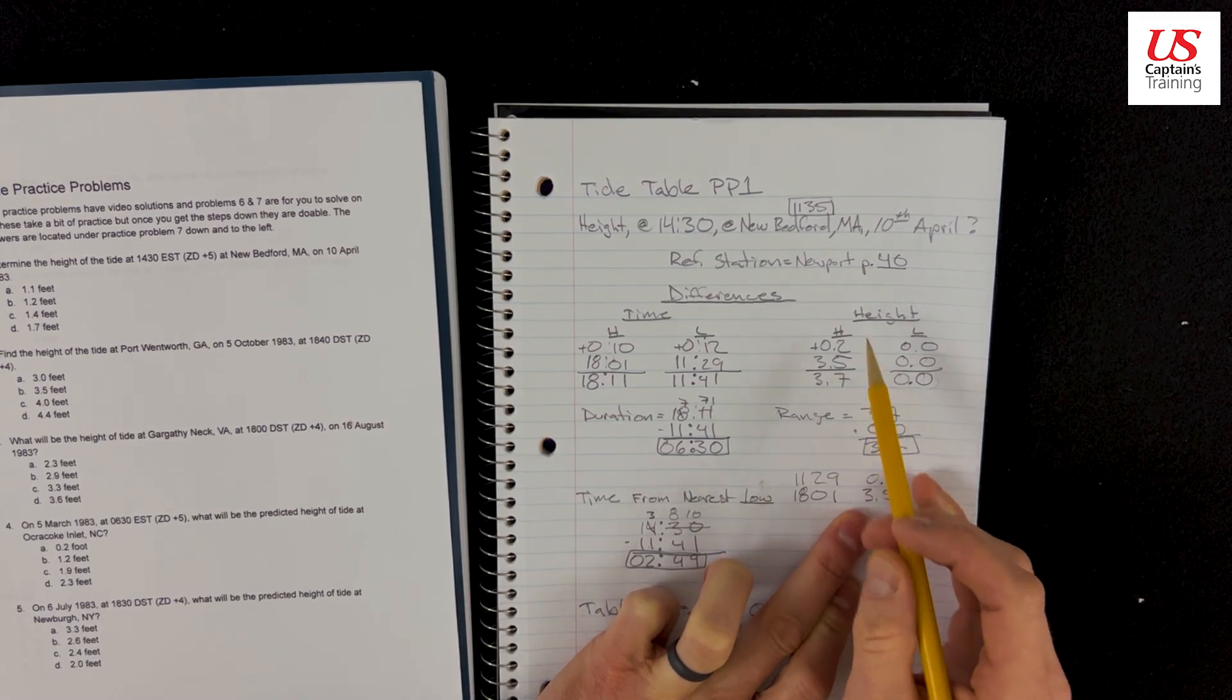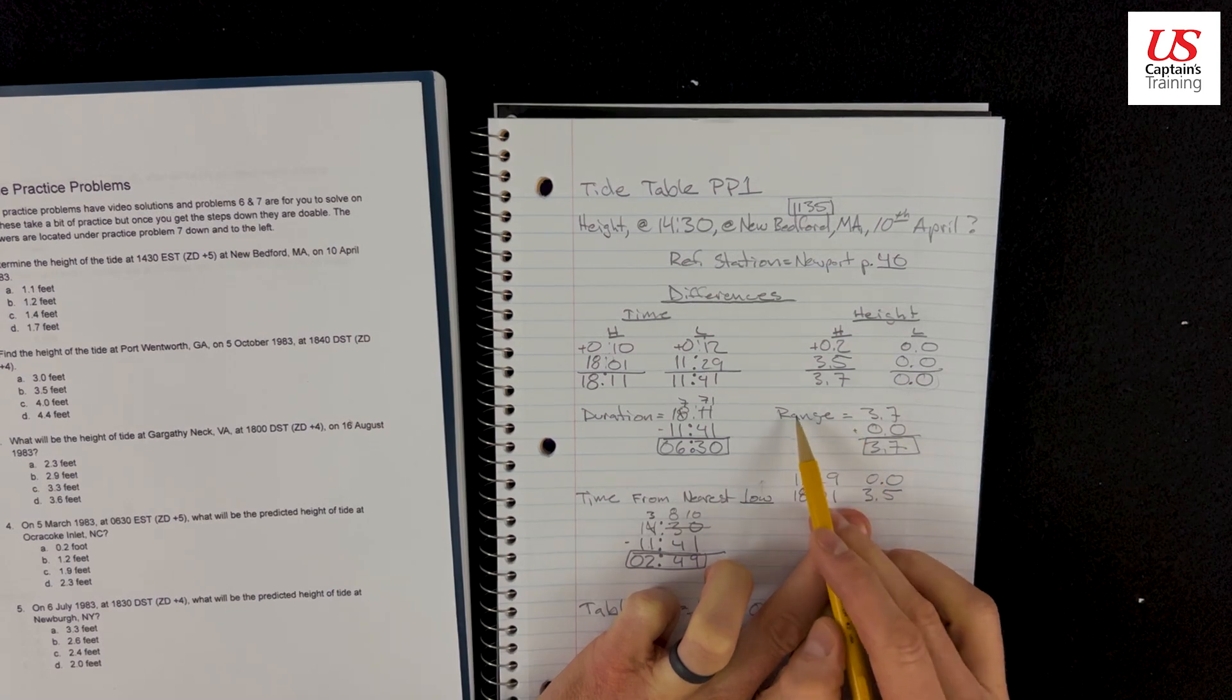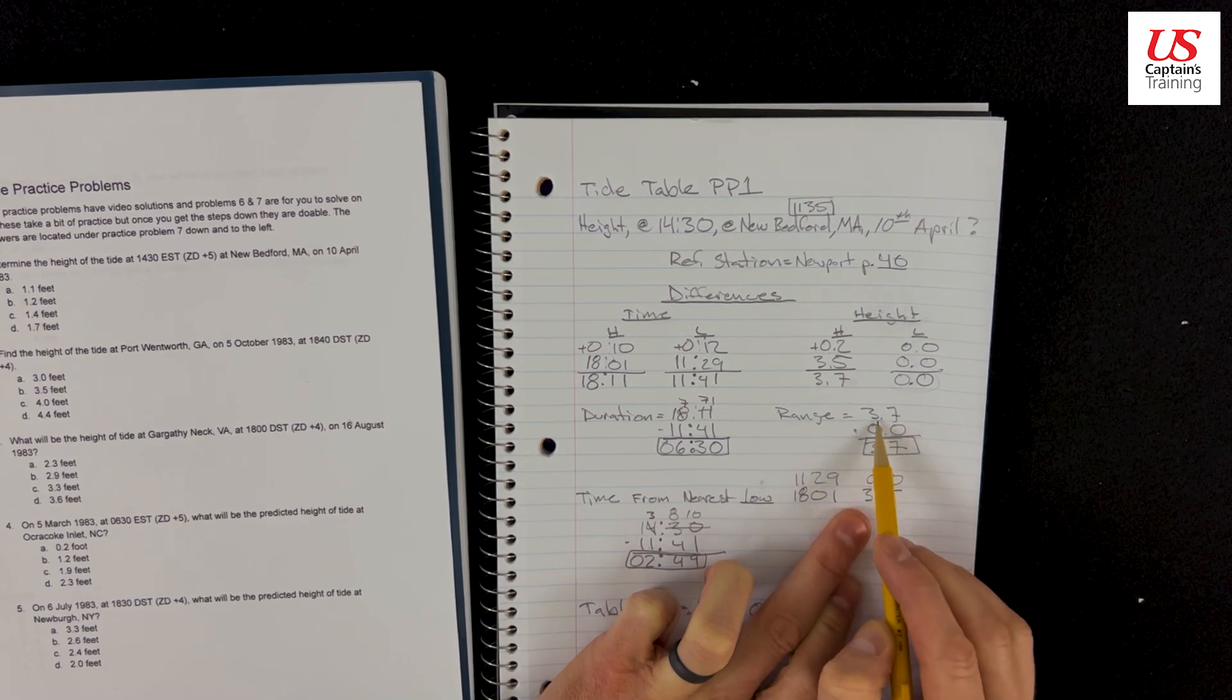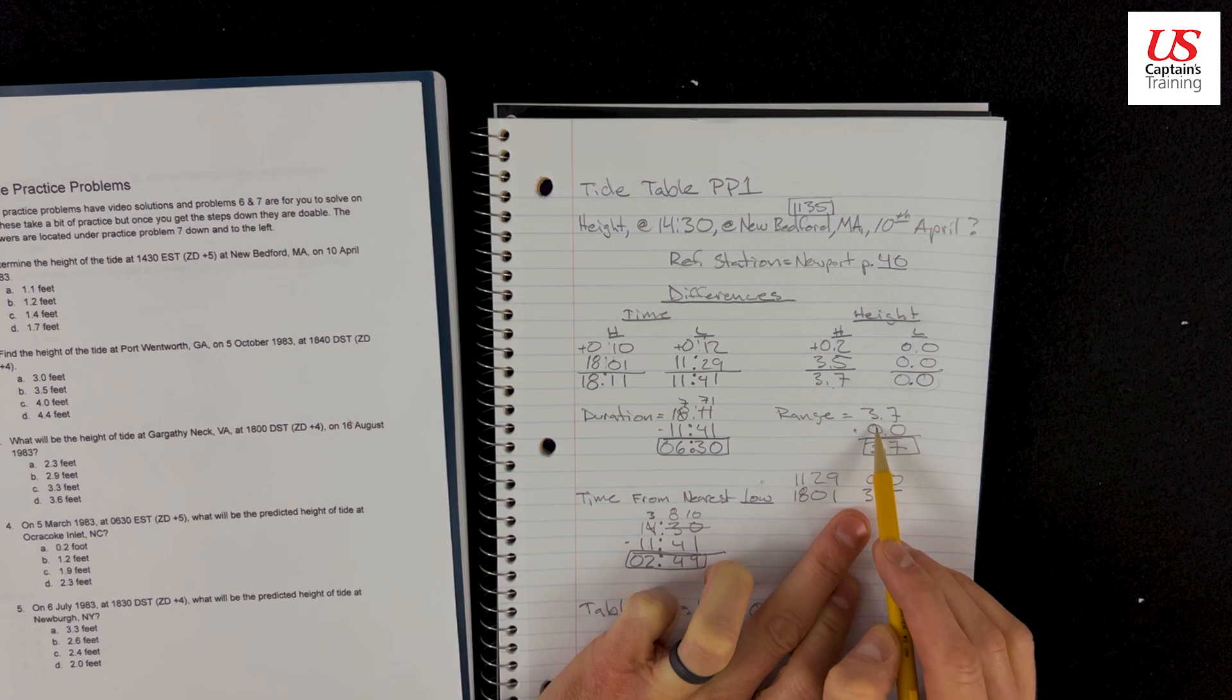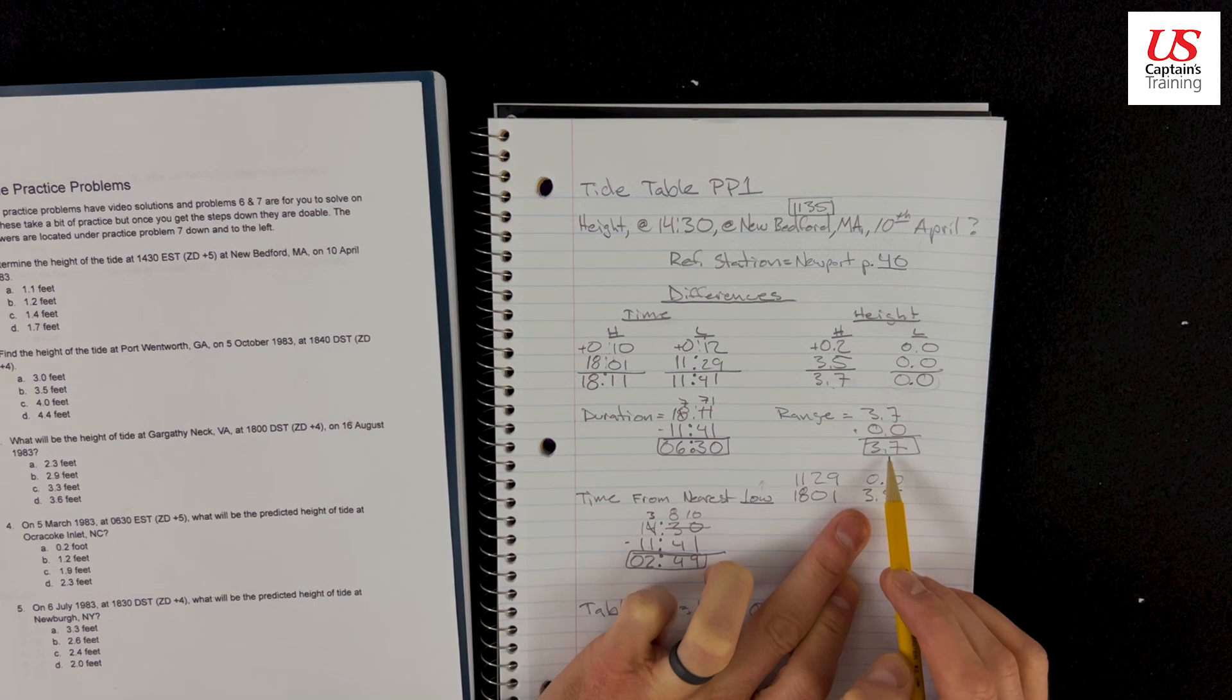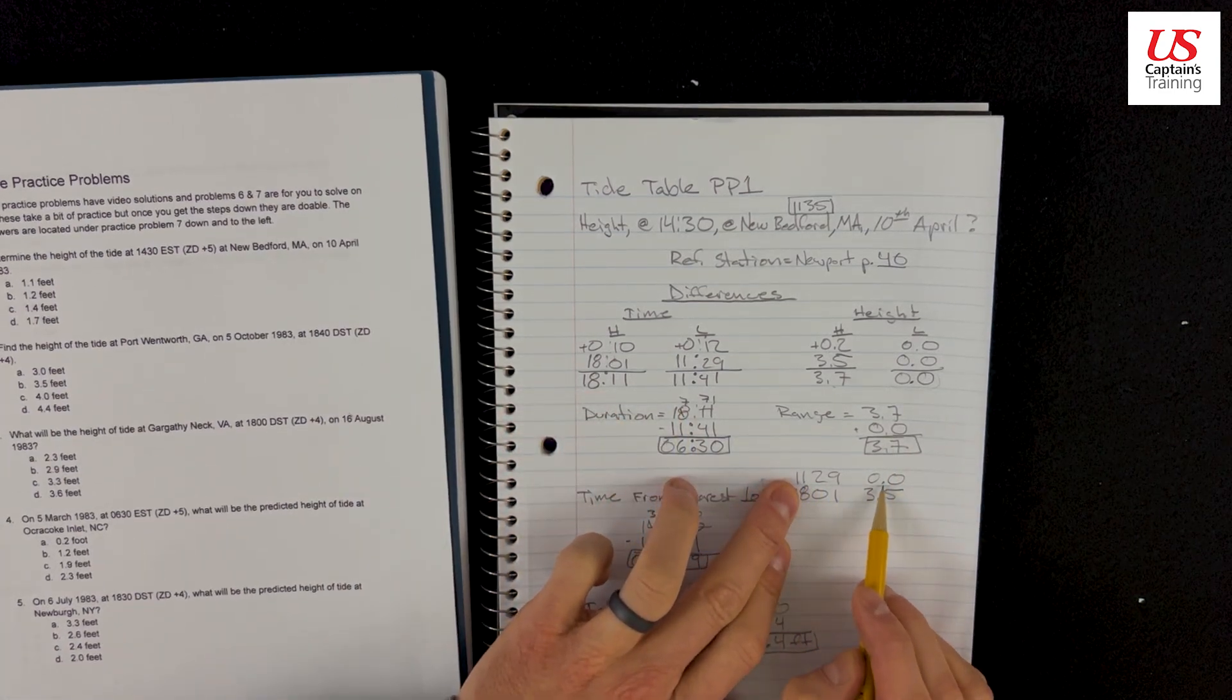So now we find, in order to enter table 3 and solve this, we need the range of this tide. So we just calculate it right away: 3.7 minus, or plus in this case, 0.0. So our range is 3.7.